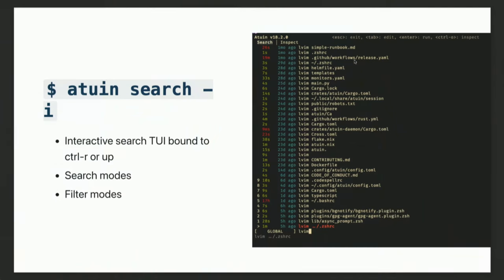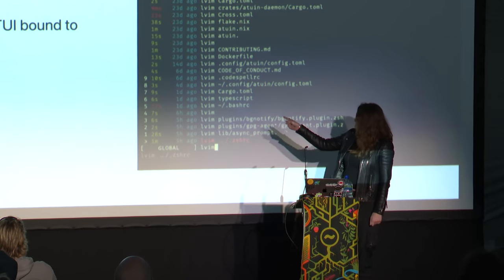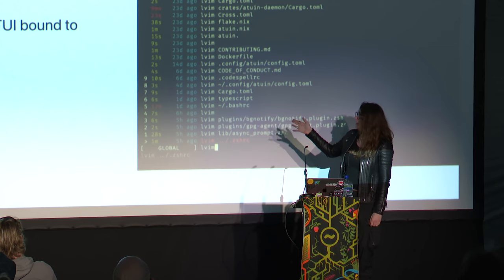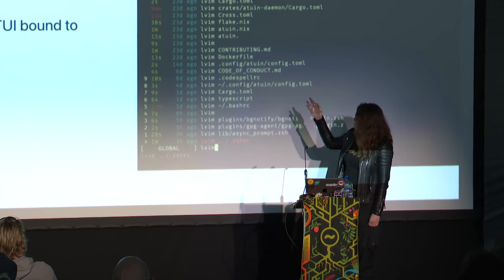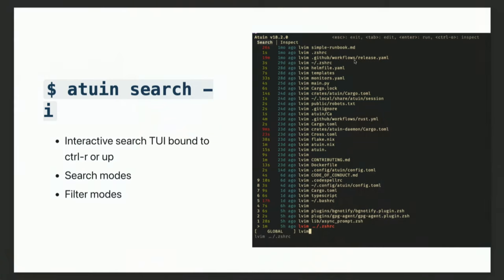You can see on the screen the search TUI that was built first. The leftmost column shows how long a command took to run, color-coded by whether it exited successfully. The next column shows how long ago a command was run, and then there's the command itself. This TUI is bound to either the up arrow or Control-R — you can customize that too — and the idea is to replace the existing history search you have.